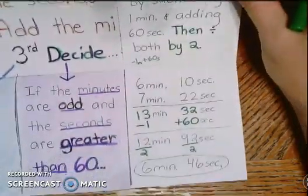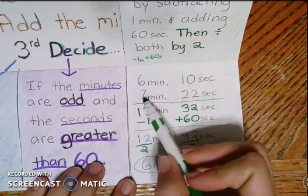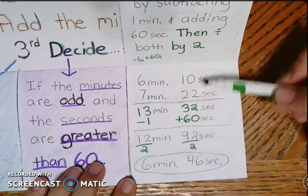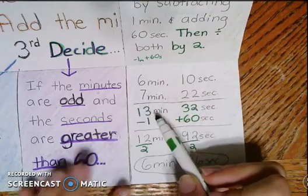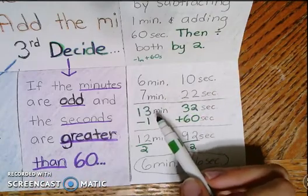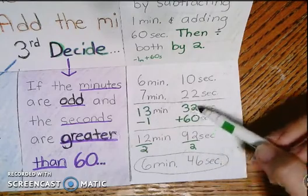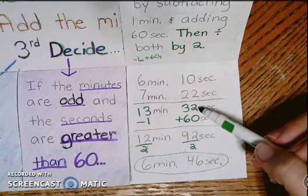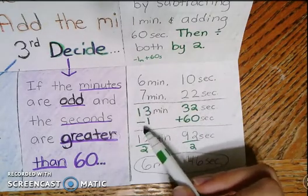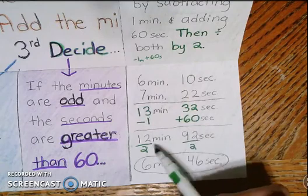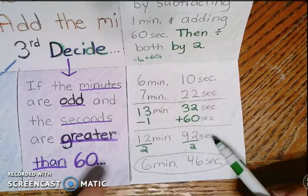So right here, we've got 6 minutes 10 seconds and 7 minutes 22 seconds. I added the seconds, added the minutes, and I got 13 minutes. So, uh-oh, it's odd. I can't just divide them by two. I'm going to look over here. And this time, I don't have enough to take away 60. So I'm going to take away a minute and trade it in for 60 seconds. Now I've only got 12 minutes, but I have 92 seconds.